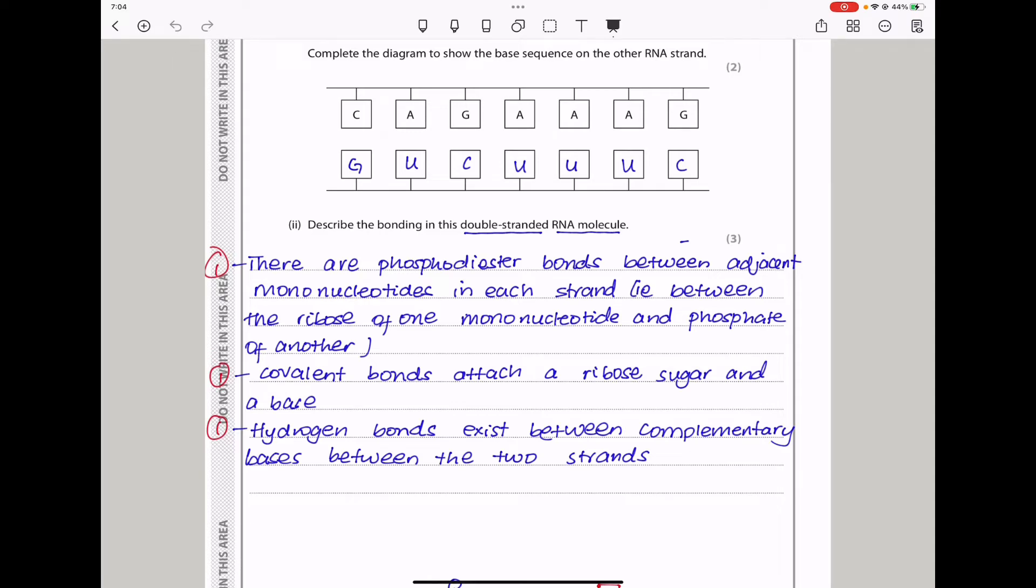Describe the bonding in this double-stranded RNA molecule. There should be hydrogen bonds between complementary bases between the two strands. There should also be phosphodiester bonds, as well as covalent bonds. In this RNA molecule, there are phosphodiester bonds, which are formed between adjacent mononucleotides in each strand, between the ribose of one mononucleotide and the phosphate of another. We also have covalent bonds that attach a ribose sugar and the base. And we have hydrogen bonds that exist between complementary bases between the two strands.